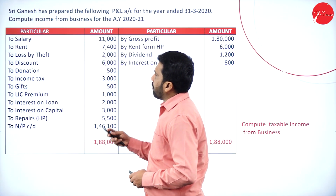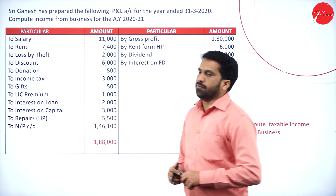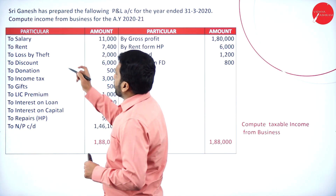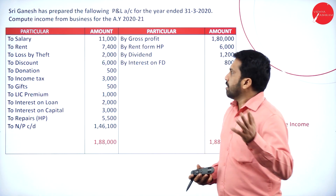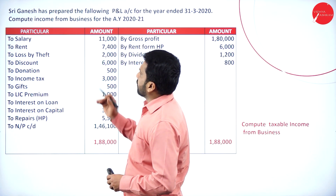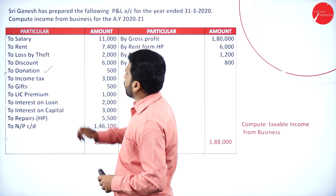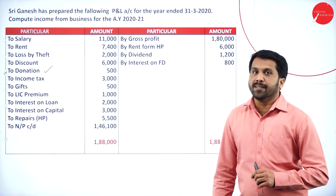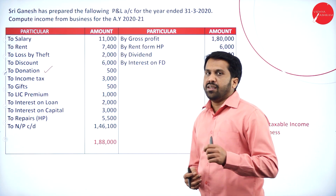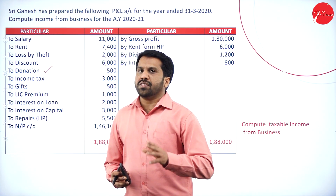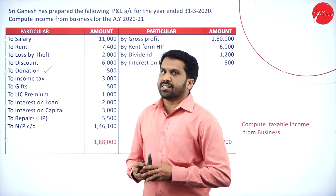Salary is part of your business — we will not touch it. Rent is part of your business. Loss by theft is also part of your business — theft is common, so it is part of business. Discount is part of your business. Donation — it is paid to NDF, the National Defense Fund, which has nothing to do with your business. That's why NDF is called an other-than-business item.